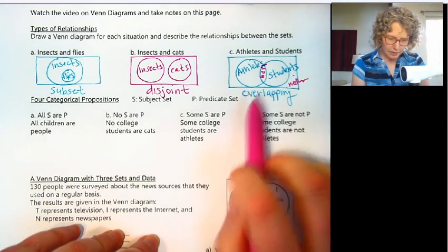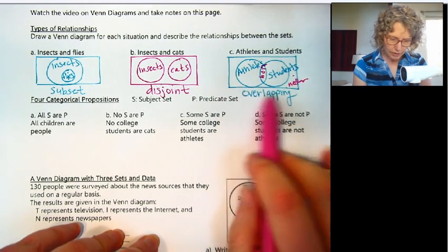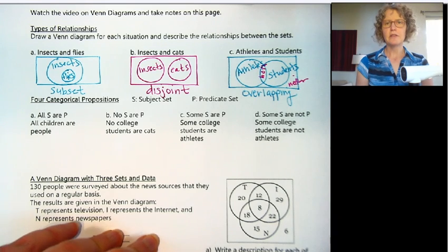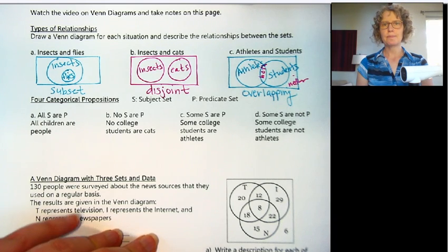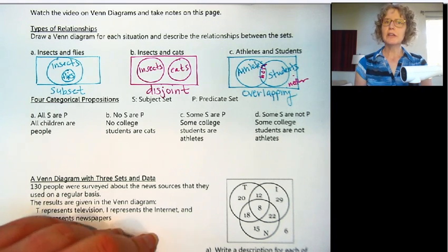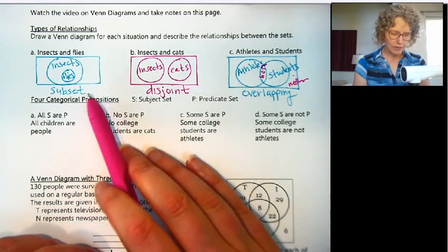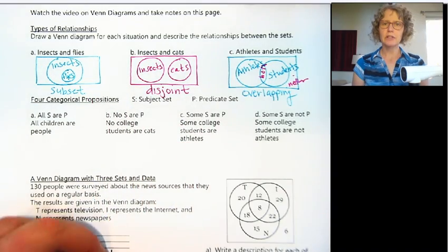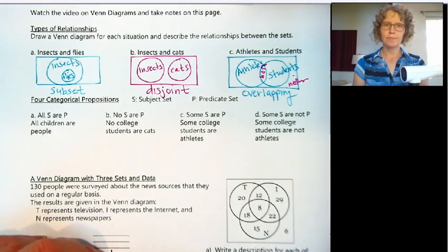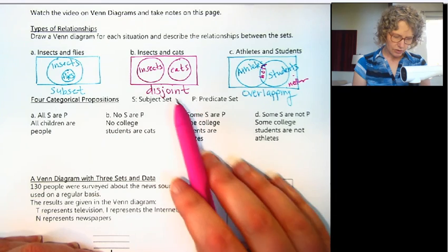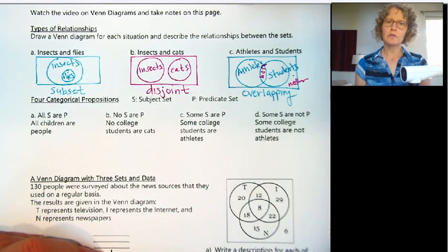Along the outside, we would have people who are not athletes and not students — so this would be neither. There are really four regions in this Venn diagram. We'll be using Venn diagrams to draw out these different relationships: three different types — subset, disjoint, overlapping.